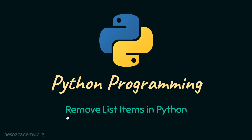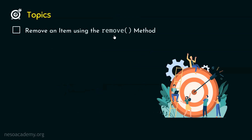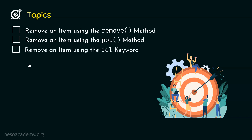In the last presentation, we understood how to update list items in Python. In this presentation, we will understand how to remove list items. The first topic is removing an item using the remove method. The second topic is removing an item using the pop method. The third topic is removing an item using the del keyword. And the fourth topic is clearing the list using the clear method.